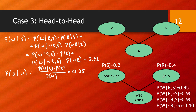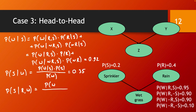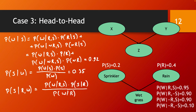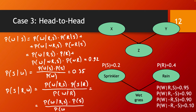As one more example, we can calculate P(S|R,W) — the probability of the sprinkler given that we know it's a rainy day and the grass is wet. Using Bayes' rule: P(S|R,W) = P(W|R,S)·P(S|R) / P(W|R). Using the independence of R and S, P(S|R) simplifies to P(S), giving P(W|R,S)·P(S) / P(W|R). Calculating this gives 0.21.